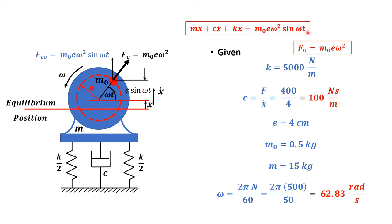The differential equation for the rotating unbalanced system is: m·x'' + c·x' + k·x = m0·e·omega²·sin(omega·t). This is basically similar to the forced vibration equation — the only difference is the amplitude of external excitation is m0·e·omega². The damping coefficient is derived from the given resistance: C = F / velocity = 400 / 4 = 100 N·s/m.